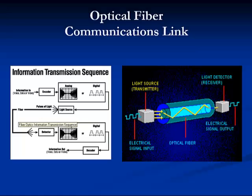In its simplest form, fiber optics is a medium for carrying information from one point to another in the form of light pulses. Unlike copper signal transmission media, fiber optics transmission is not electrical in nature and therefore has many advantages. However, transmission of signals over fiber is more complex because electrical signals must be converted to optical pulses, then reconverted back to electrical signals.